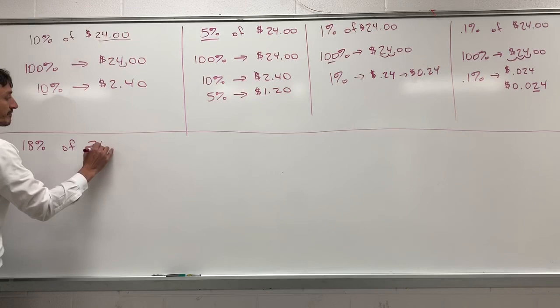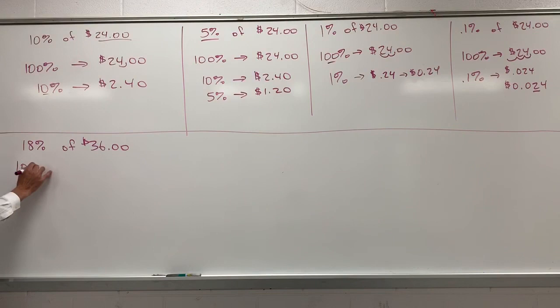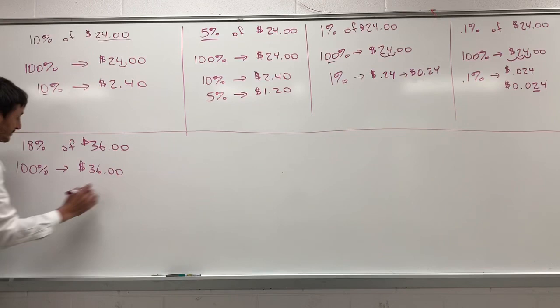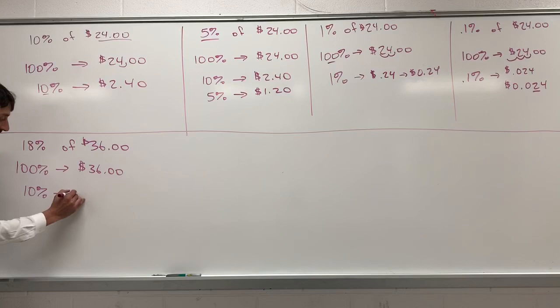The first thing we have to do is we have to consider 100% of the cost of the item to be $36. Next, we're going to find 10%. And to find 10% is to move the decimal one place to the left, which gives us $3.60.